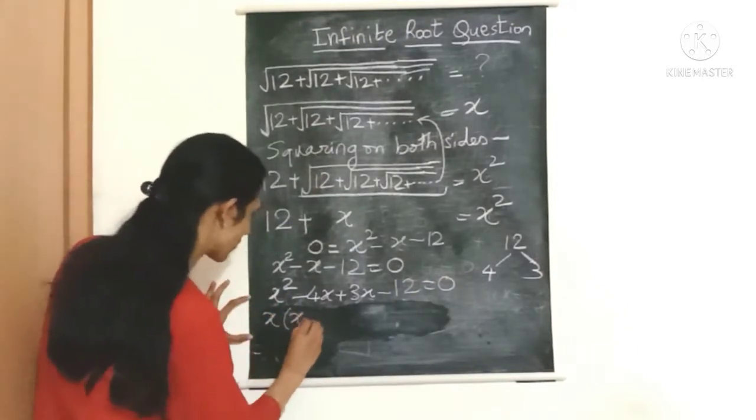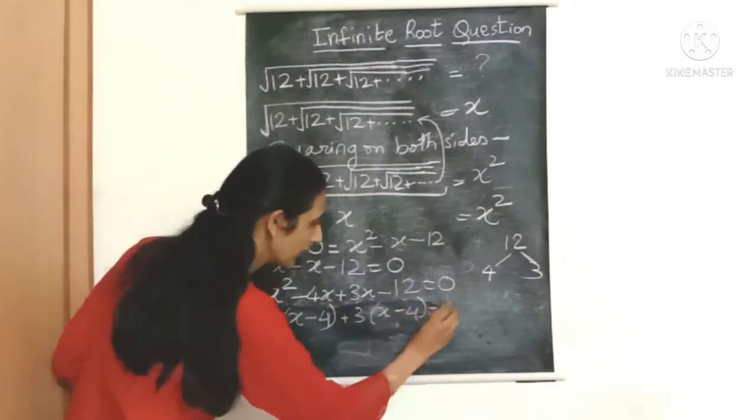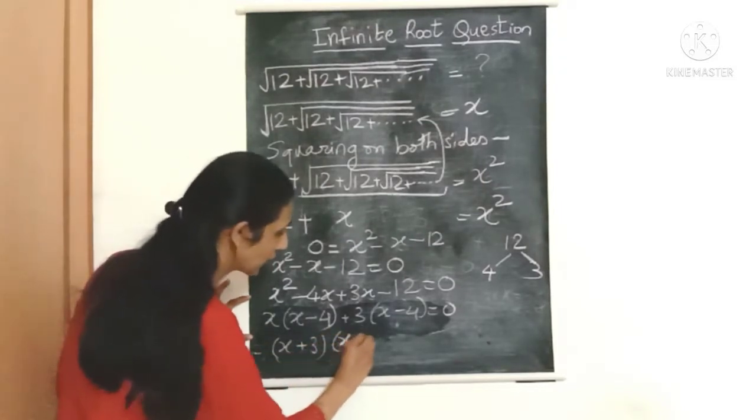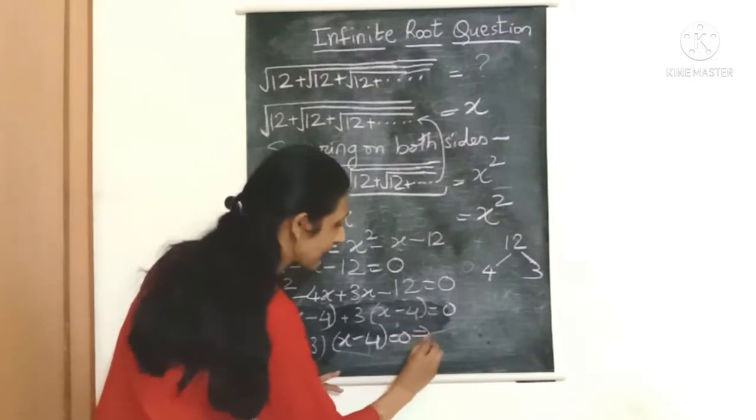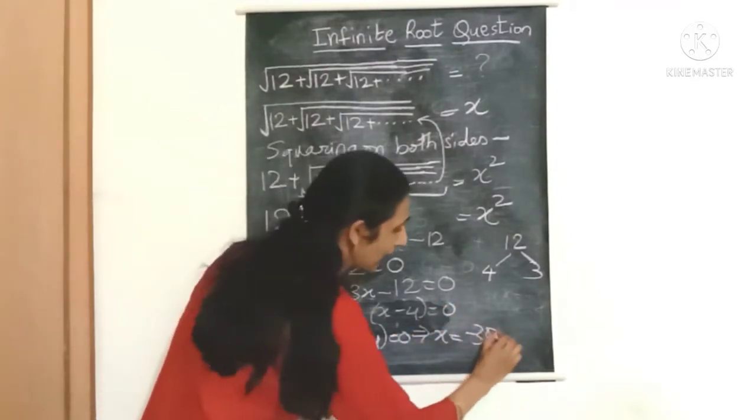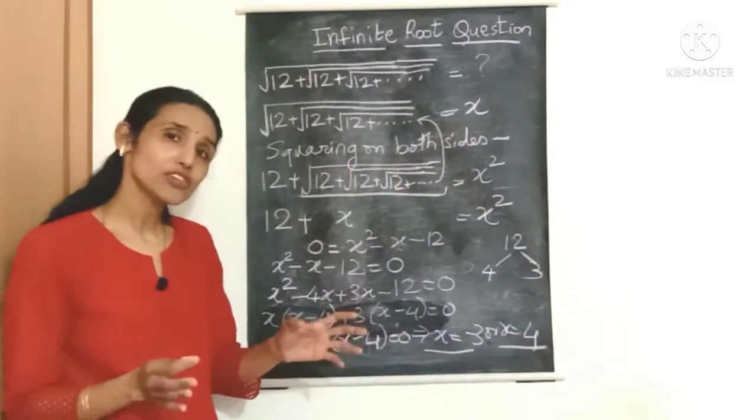Let's take out whatever can be taken out common. So we'll get x minus 4 here, plus 3 into x minus 4 over here. Let's solve it further. We'll get x plus 3 into x minus 4 equal to 0. Now this means that x is equal to minus 3 or x is equal to 4.